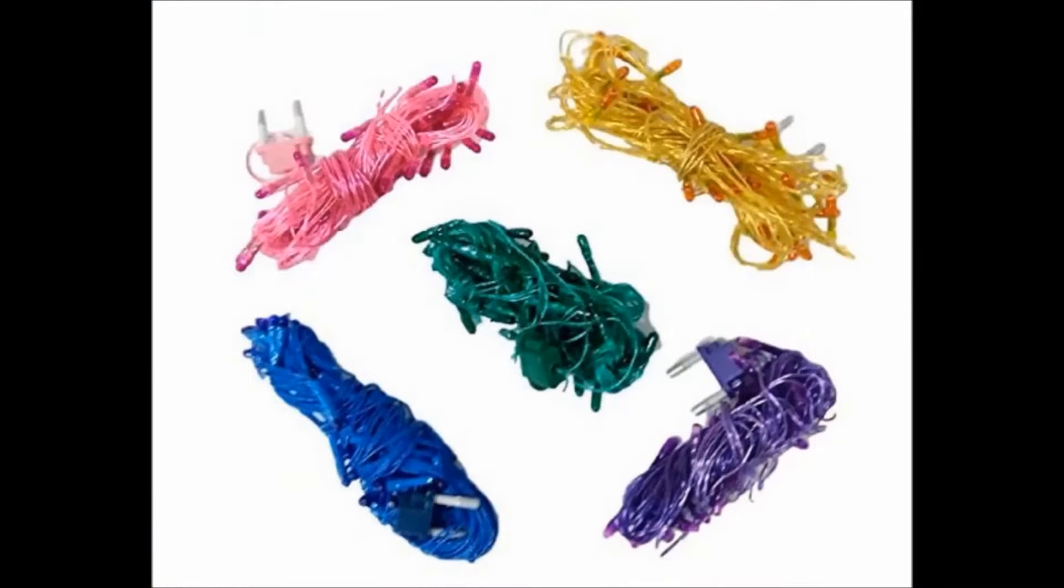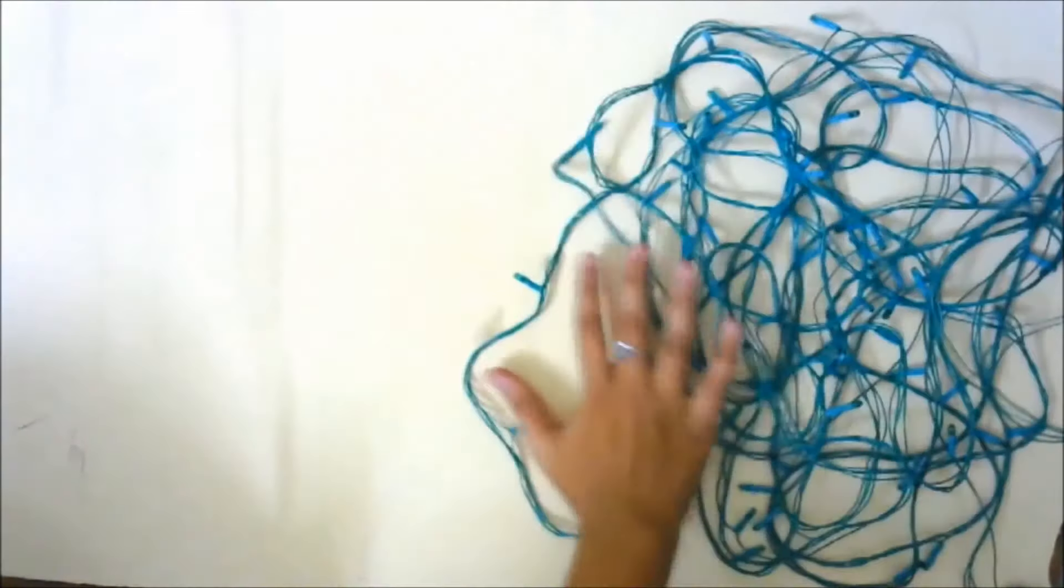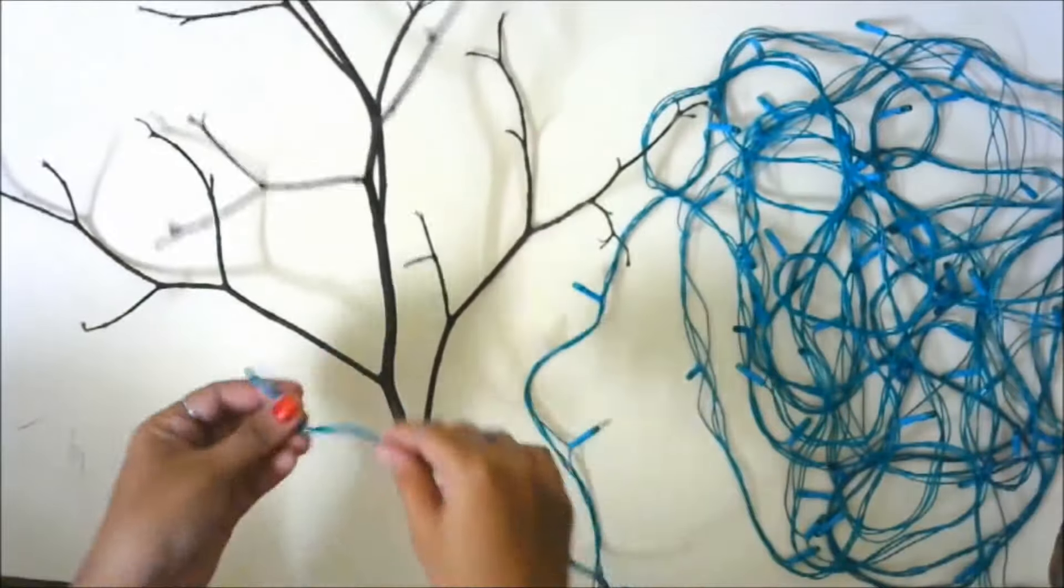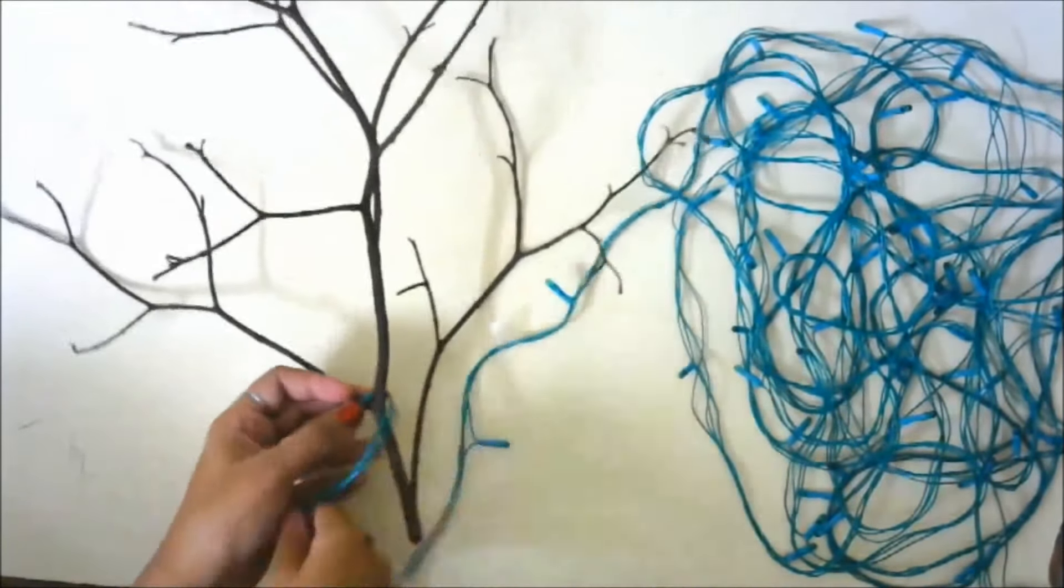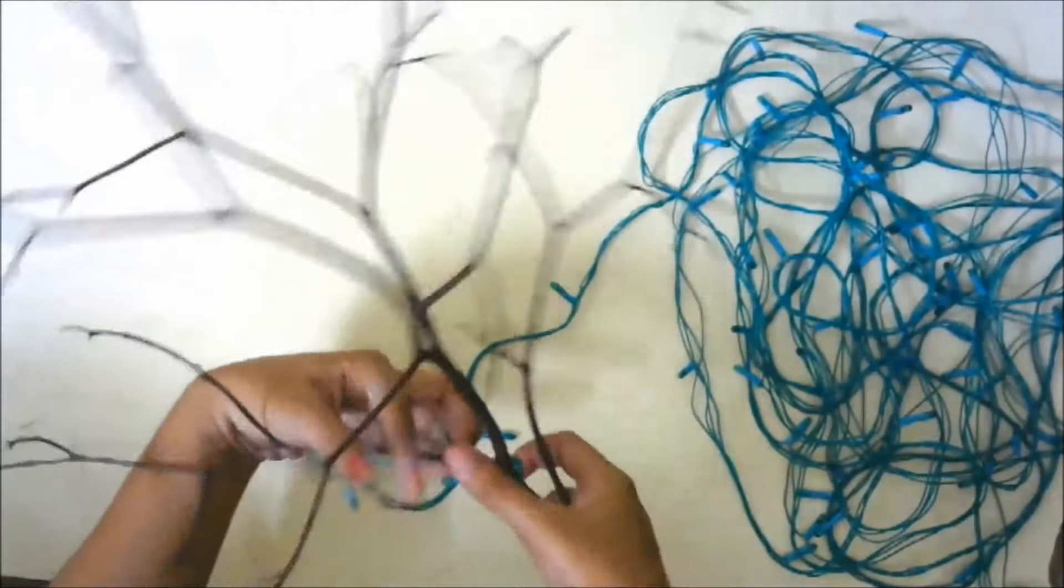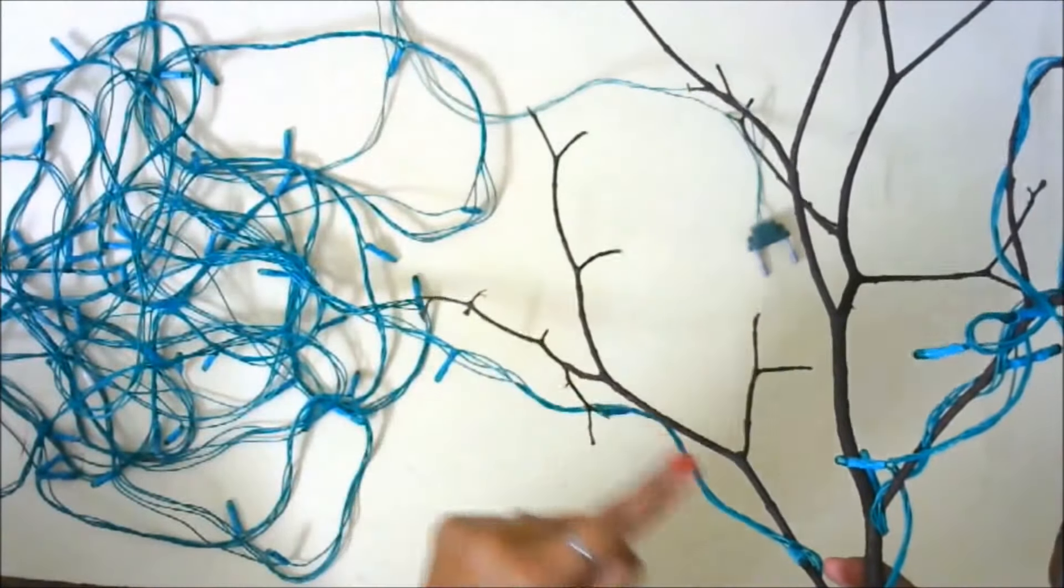Now I'm taking the already colored branch and start twisting the green lights all over it as shown in the video. You can twist these lights all over the branch in any way you like, but one thing you need to make sure is that you need to cover the entire branch that we have taken.